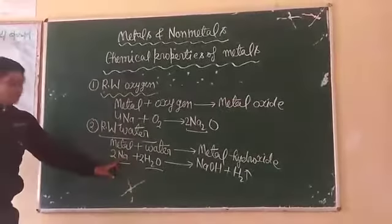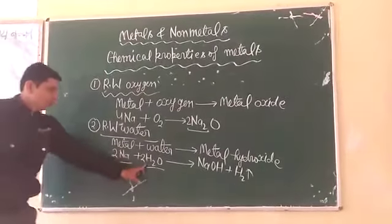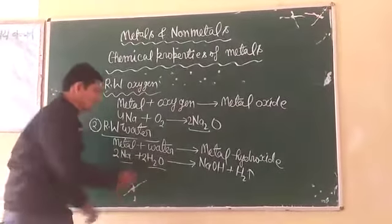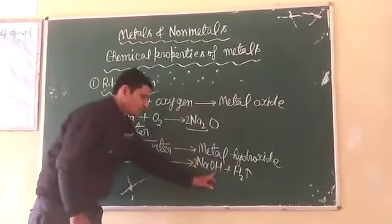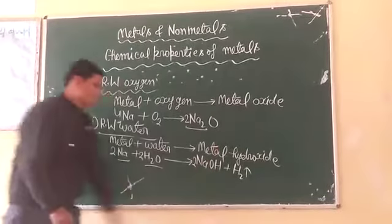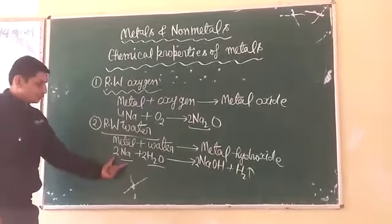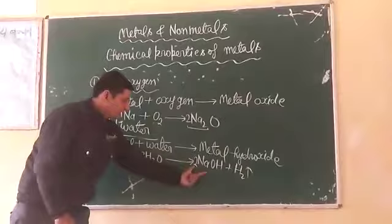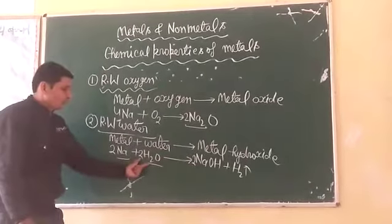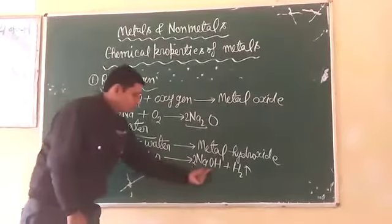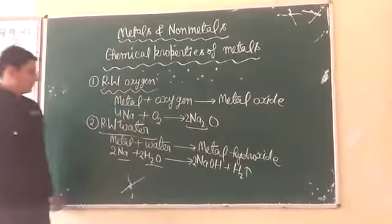Sodium metal reacts with water to form sodium hydroxide and hydrogen gas is released. To balance it: 2Na + 2H₂O → 2NaOH + H₂.